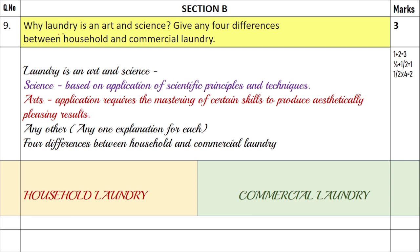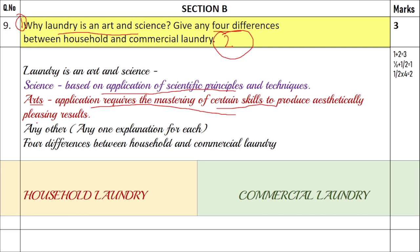Question number nine: why is laundry an art and a science, and give any four differences between household and commercial laundry. The first part carries one mark and the second carries two marks. Laundry is a science because it is based on the application of scientific principles and techniques — for example, using acidic soap on woolens and silks, and base soaps on cottons. It is an art because it requires mastering certain skills to produce aesthetically pleasing results, such as how to iron clothes, how to hang them, and how to present them.